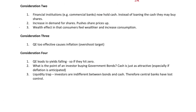Consideration two: financial institutions such as commercial banks now hold cash from the original transaction where the central bank gave them cash in exchange for gilts. But what if instead of passing that cash on as loans to consumers or businesses, they use it to buy shares? If they go and buy shares, that increases demand for shares, which pushes share prices up. There's an argument that this creates a wealth effect — consumers who hold shares feel wealthier and increase their consumption.